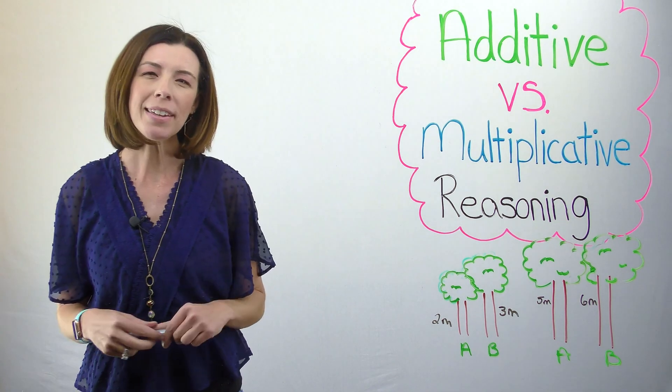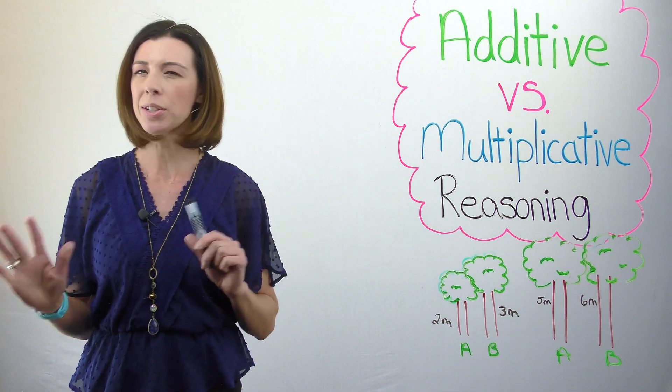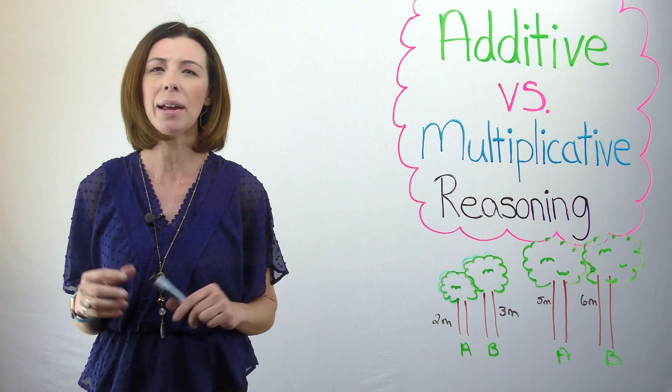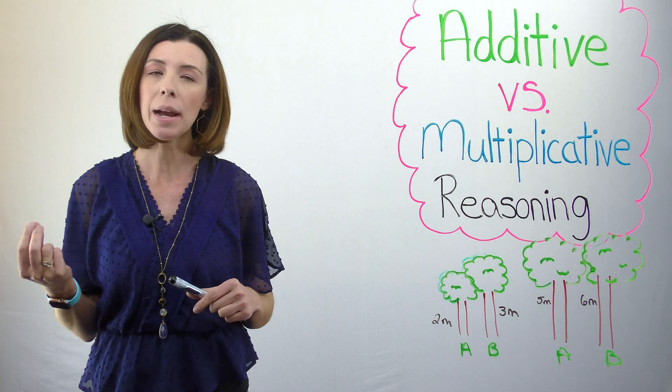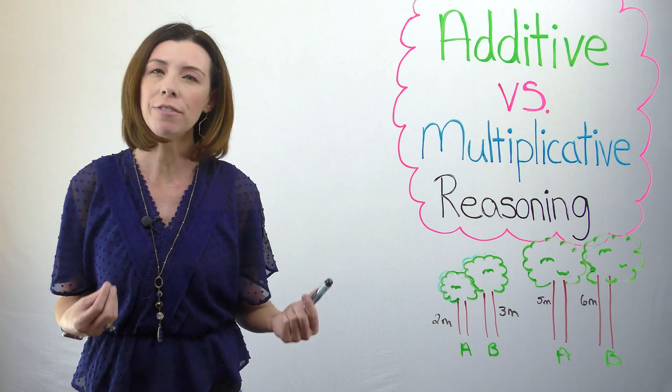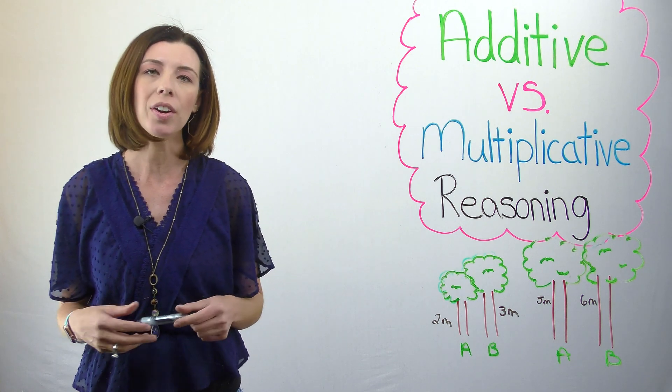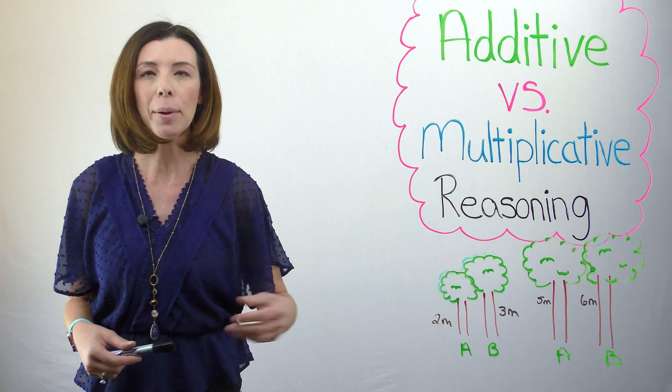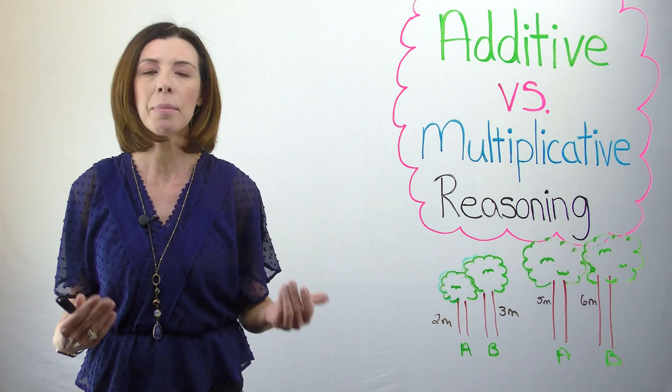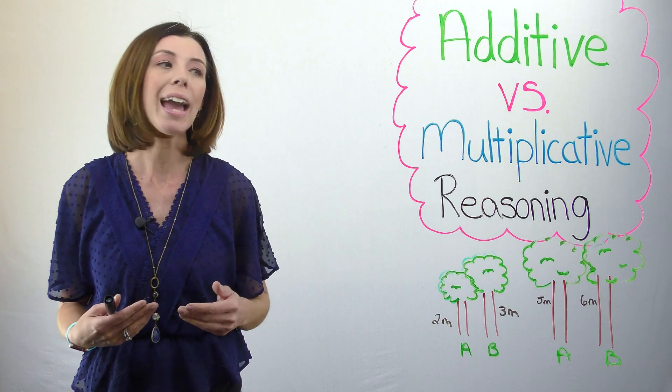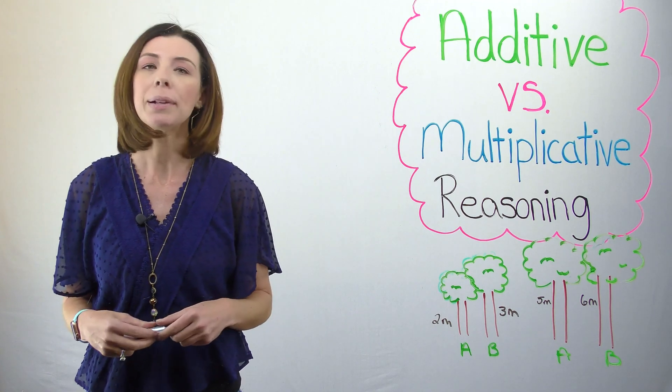Now you might be thinking, okay, so are you trying to sway us? Like is one kind of reasoning better than the other? No. Actually, there are certain cases where one type of reasoning might be more beneficial or give you more information than the other. For example, our tree problem. Saying that they both grow three meters doesn't really help me compare them. This is why I might want to look at comparing them multiplicatively.